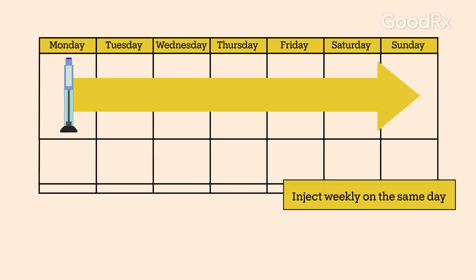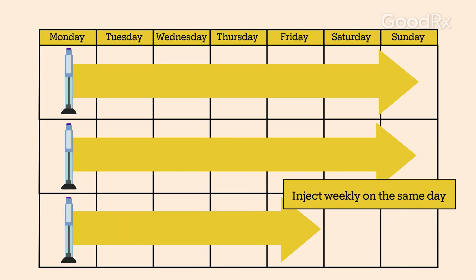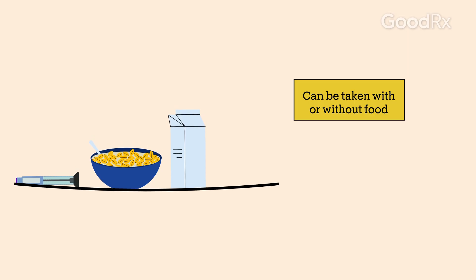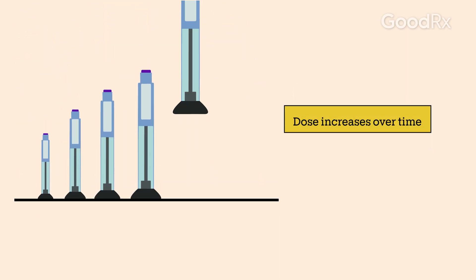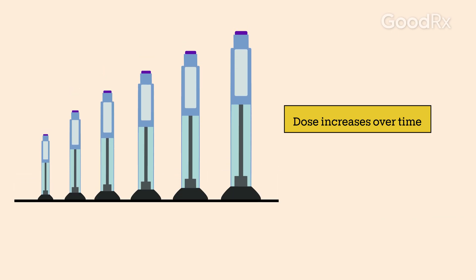ZepBound is an injection that you use once a week on the same day each week. You can use it with or without food. You'll start with a low dose and then increase your dose over the course of several months to help limit side effects.